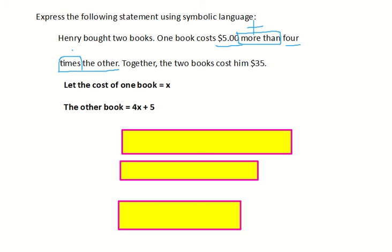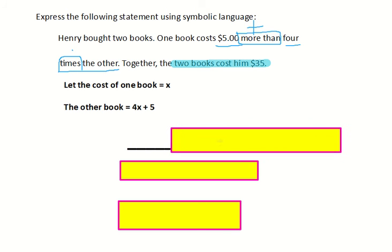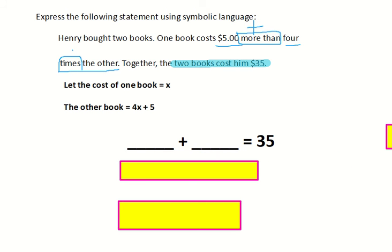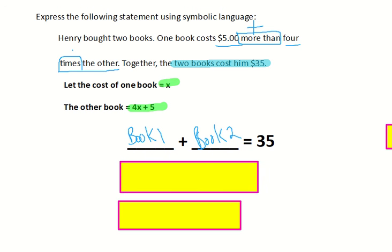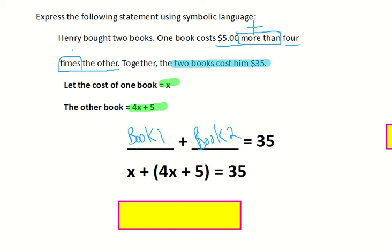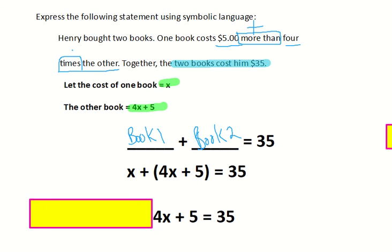They tell us that the two books cost him thirty-five dollars. So if you add the cost of the two books together — cost of one book plus cost of the other book — you get thirty-five. We take the two expressions, x and four x plus five, and plug them in. We get x plus four x plus five equals thirty-five. Remove the parentheses, and there is your symbolic language for this problem.